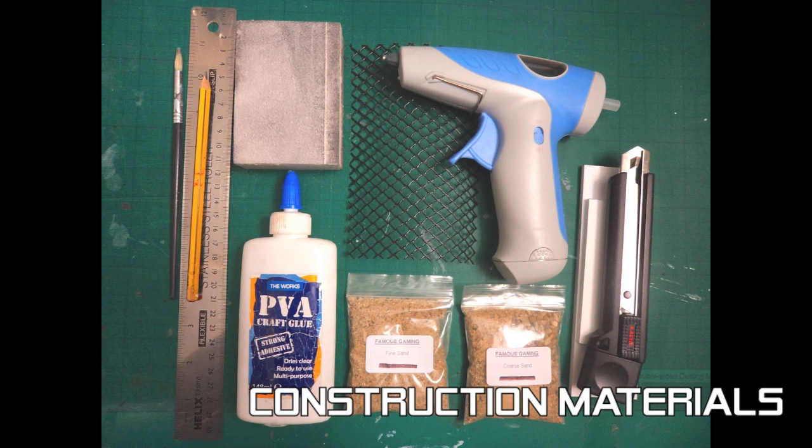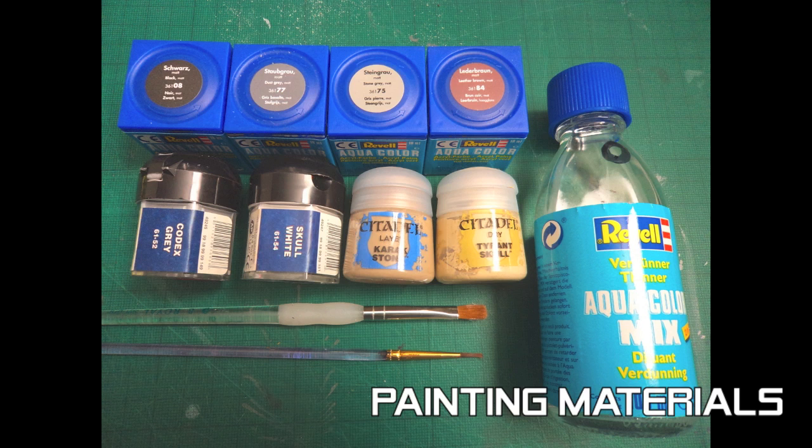To paint this crew fencing I will be using 4 colours from the Revell aqua colour range: black, dust grey, stone grey and leather brown. They will be thinned with the aqua colour mix 2 in 1 so it will be suitable to use my airbrush.